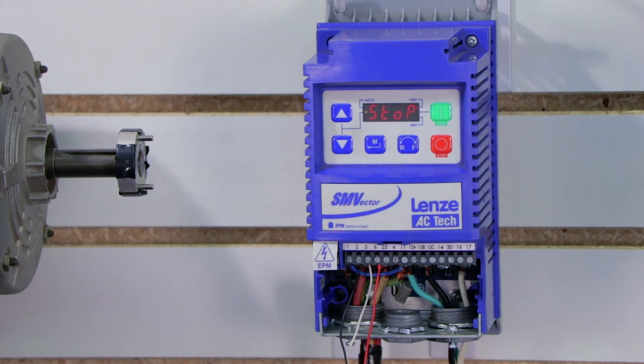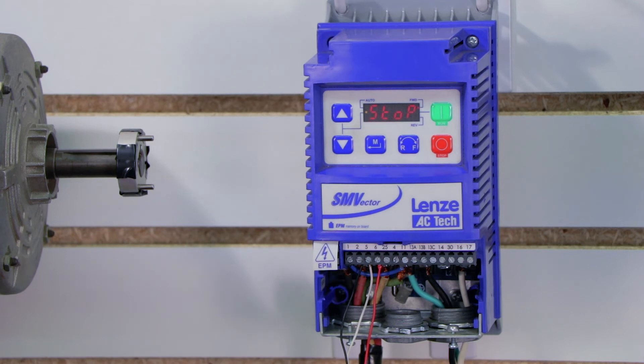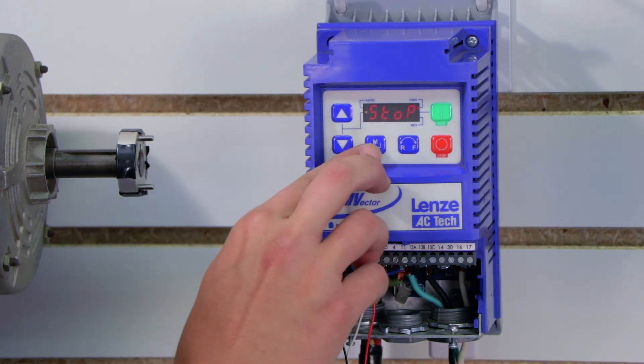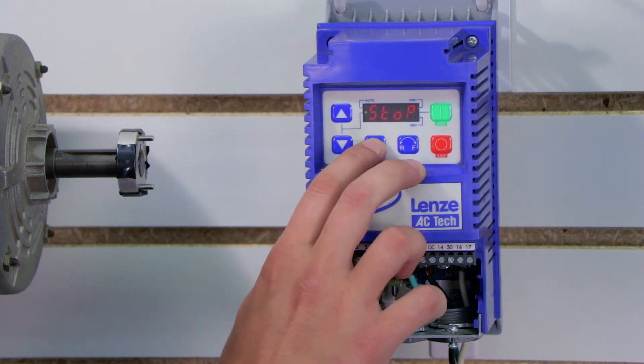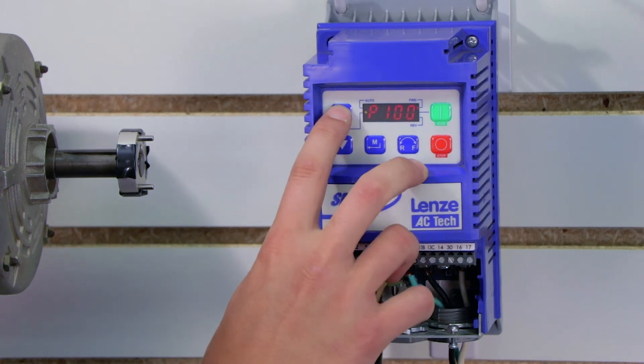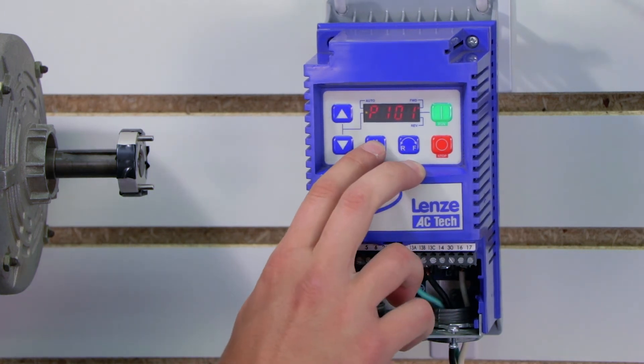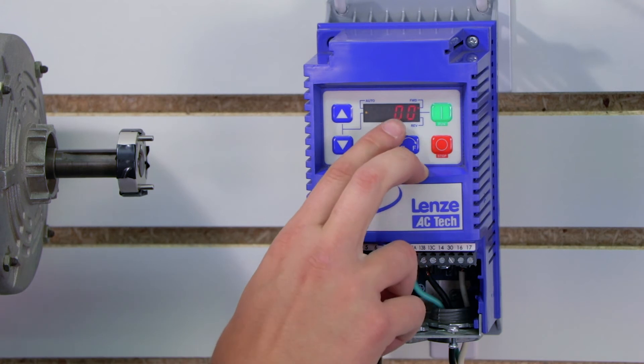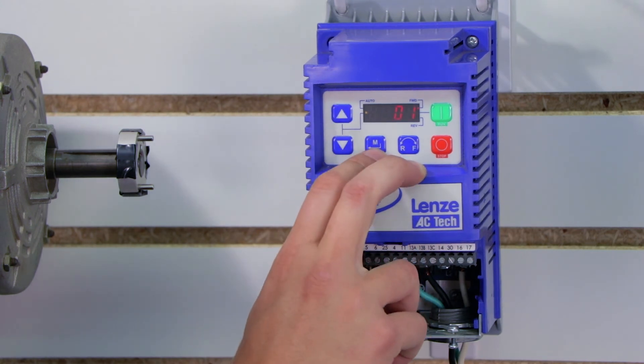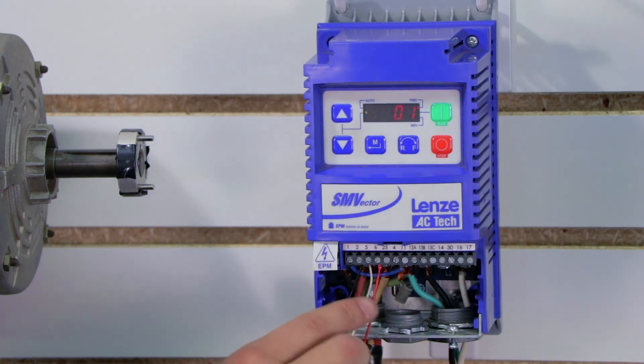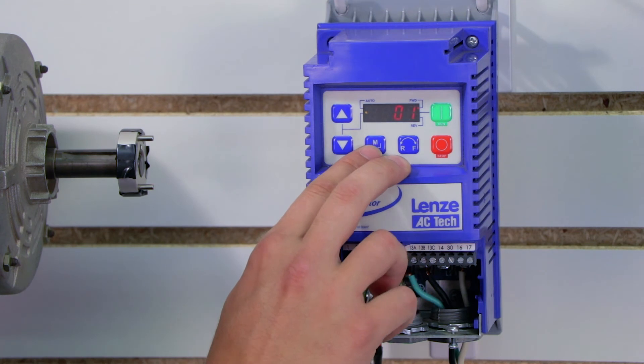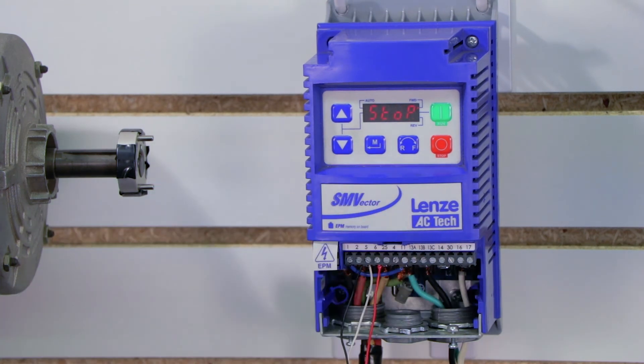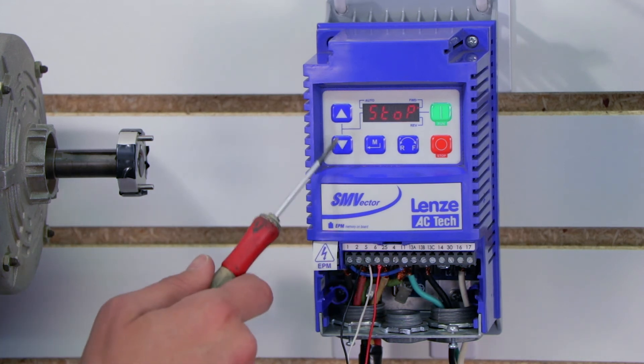After we do the wiring then we have to change one parameter and that's up here at the keypad. In order to bring up our parameters we have to press this M button and we got to go to P101 and press the M button again. By default it's set to look at the keypad which is zero zero for our speed, and we're actually going to tell it instead to look at our terminal strip or speed pot which is zero to 10 volts and press M.